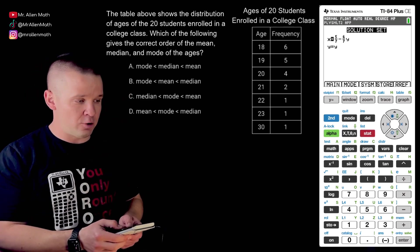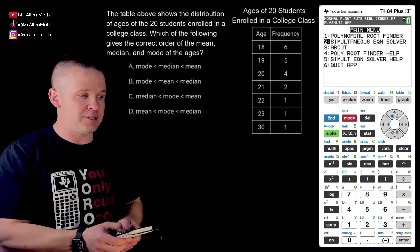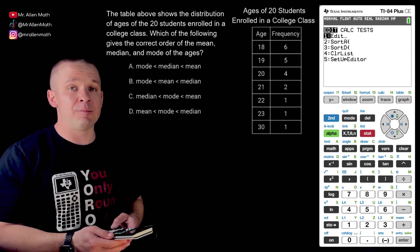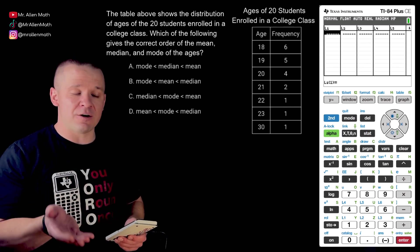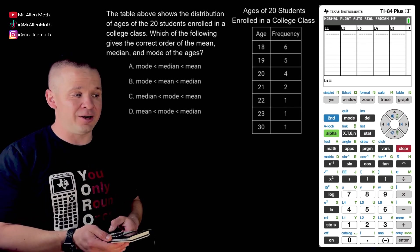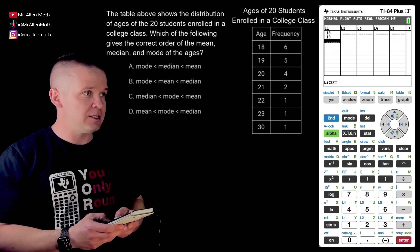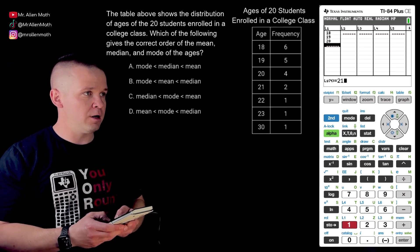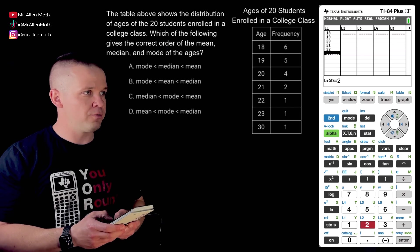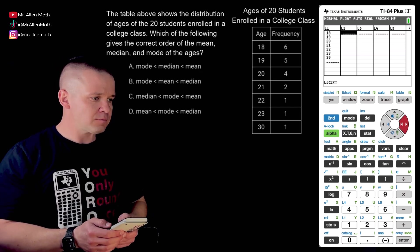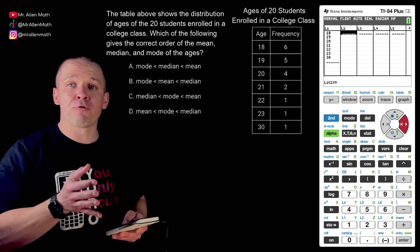I'm going to hit stat. Actually we got to quit out of this old app here. Second quit. Second quit. To get back to the home screen. Now I'm going to hit stat. I'm going to edit. And if you have some stuff in this list you just arrow up, hit clear, and then enter. And I'm going to type in that first column. So I got 18, 19, 20, 21, 22, 23, and 30. Okay, random jump there. Arrow to the next one. That's where our frequency is going to go.